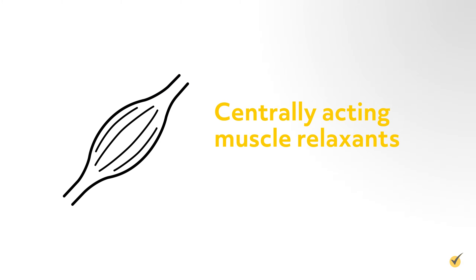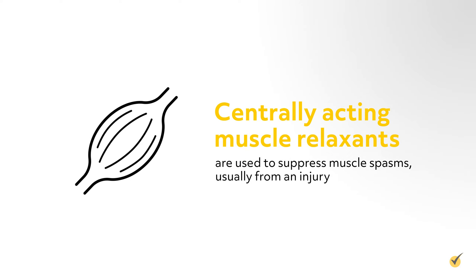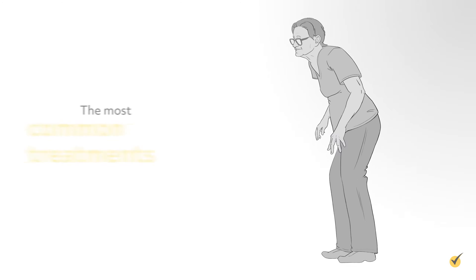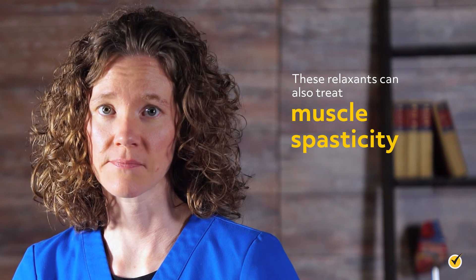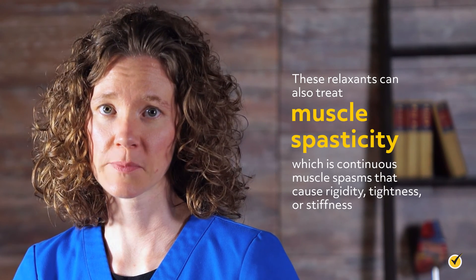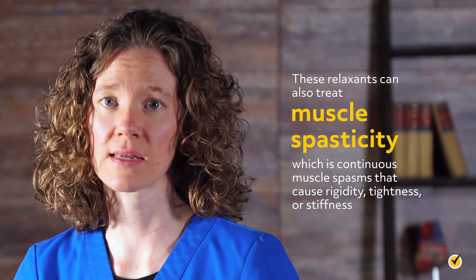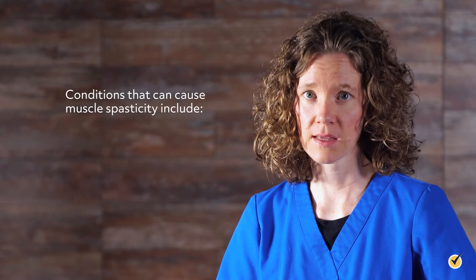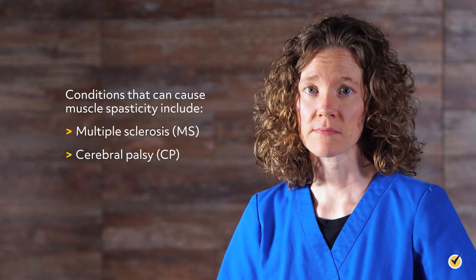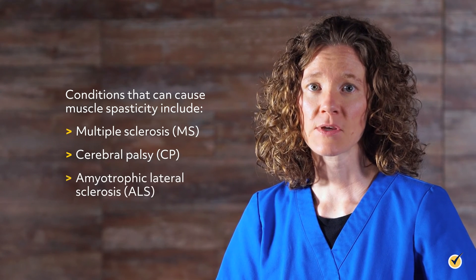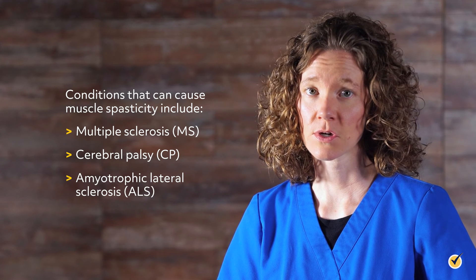Centrally acting muscle relaxants are used to suppress muscle spasms, usually from an injury. The most common treatments are for back pain or neck pain. These relaxants can also treat muscle spasticity, which is continuous muscle spasms that cause rigidity, tightness, or stiffness. Conditions that can cause muscle spasticity include multiple sclerosis, cerebral palsy, and amyotrophic lateral sclerosis.